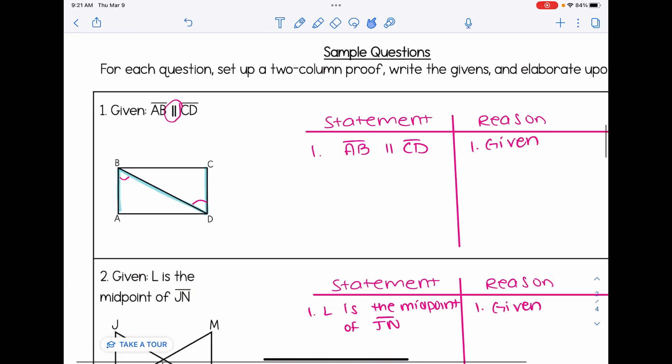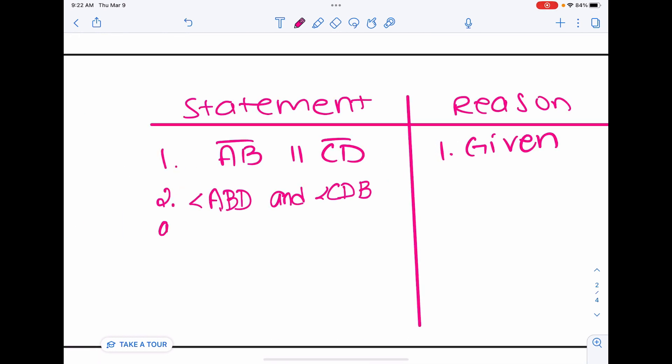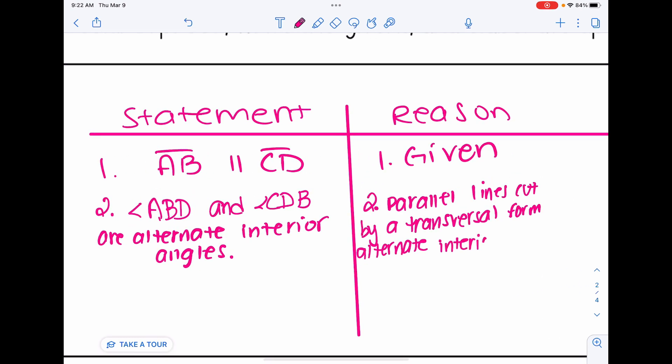If I take a look at this here, it says something and something are alternate interior angles. So I'm going to say angle ABD and angle CDB are alternate interior angles. And again, you can refer back to that cheat sheet to help you. And my reason is parallel lines cut by a transversal form alternate interior angles. Remember that your reason always is justifying the statement that you just wrote. And in the next line, I'm going to say that they're congruent using the same two angle names. And I know they're congruent because alternate interior angles are congruent.